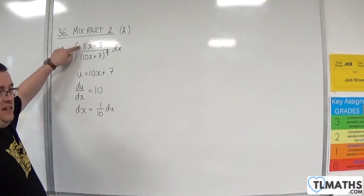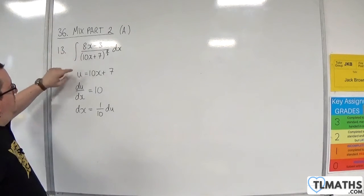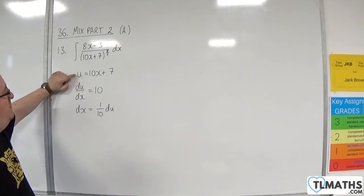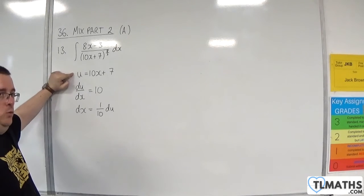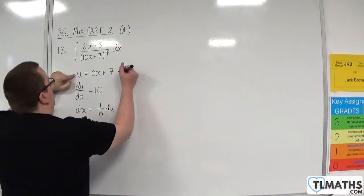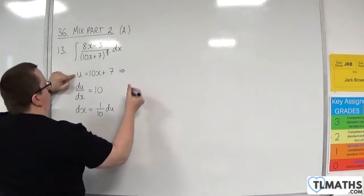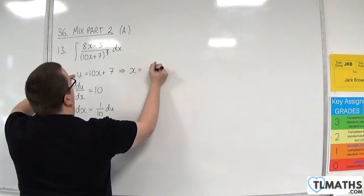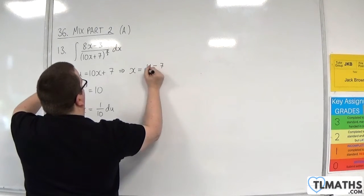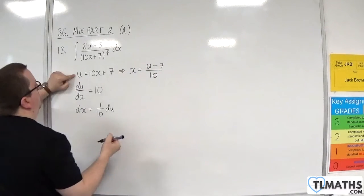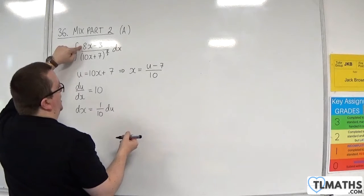Now the problem bit is the 8x take away 3. So I'm going to have to go to my substitution and find a way of manipulating that to get 8x take away 3. So probably the easiest way is just to rearrange this to get x equals u take away 7 over 10, and then I'm going to substitute that into 8x take away 3.